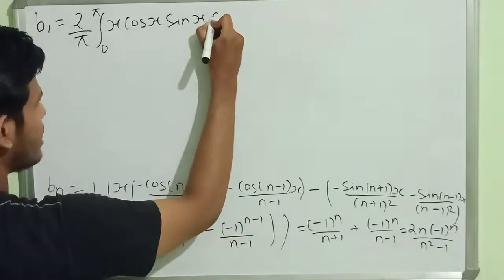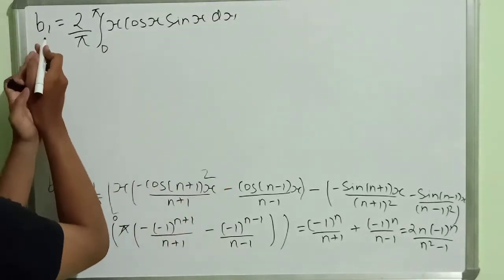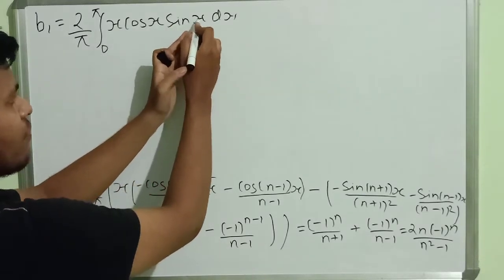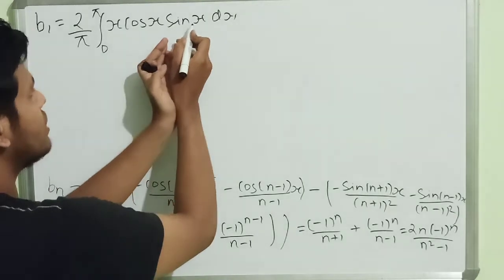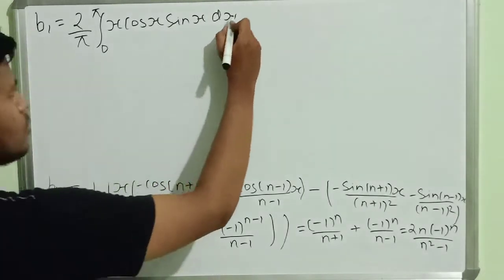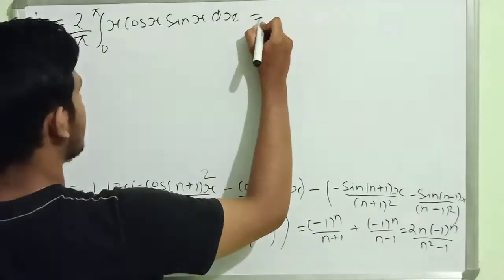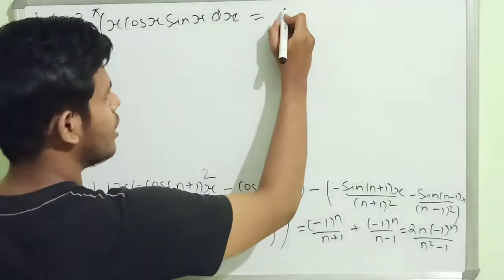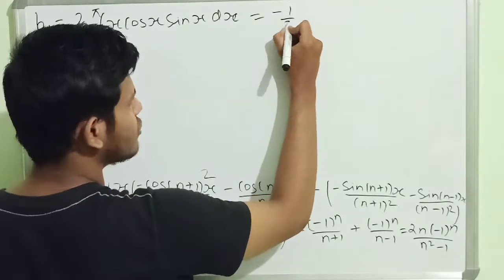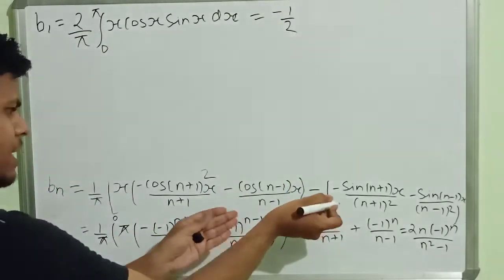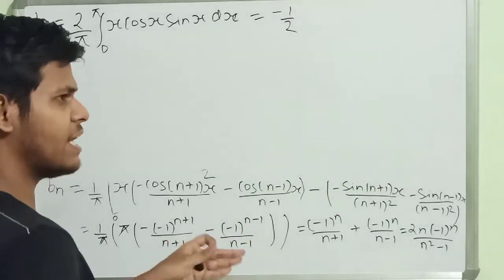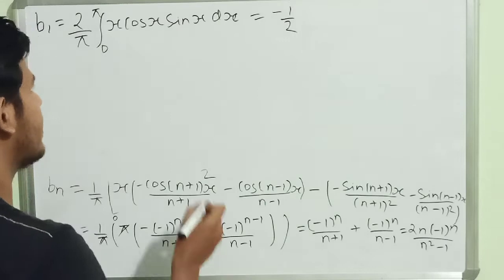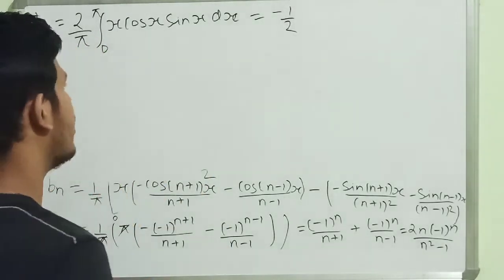To find b_1, we set n equals 1, so sin(nx) becomes sin(x). Solving this using integration by parts with limits 0 to π gives the value of b_1 equals minus 1/2.